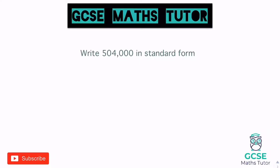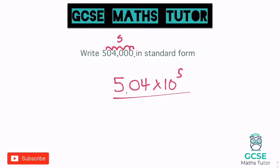A bigger number: 504,000 in standard form. There isn't a decimal in this number, but it would be at the end. To write this in standard form, we do 1, 2, 3, 4, 5 hops, making the number 5.04 — not forgetting that 4 exists. So it's 5.04 times 10 to the power of 5. Remember: large number gives a positive power, nought point number gives a negative power, for however many hops you've done to make it between 1 and 10.